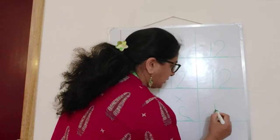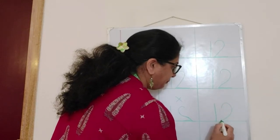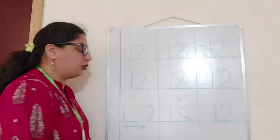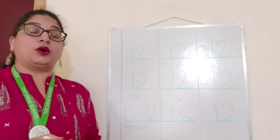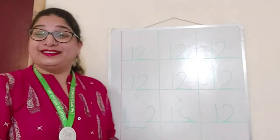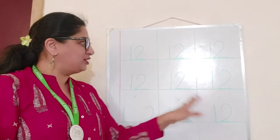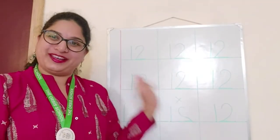You are going to write it like this. 1, 2, 12. Okay. My board is looking very neat. This is okay. Is my board looking neat?